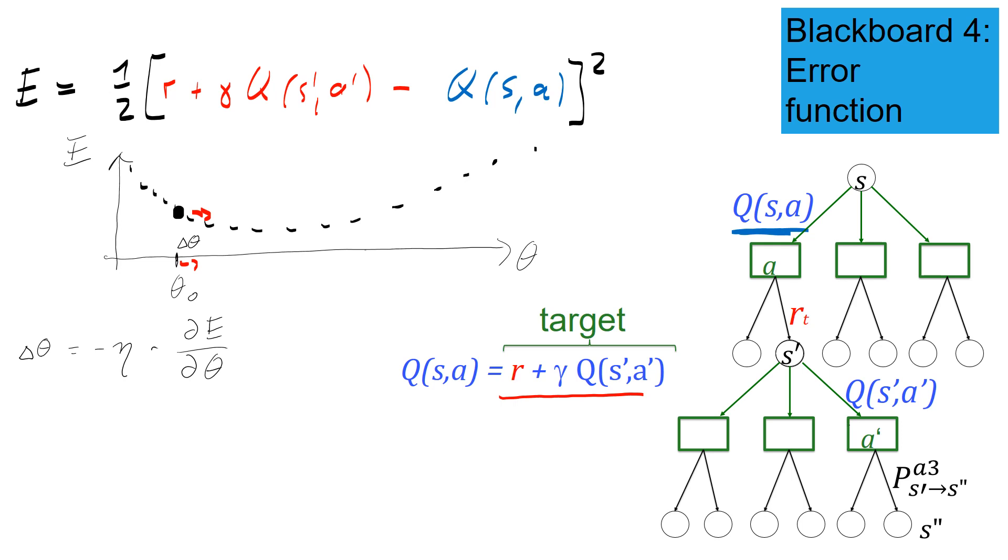Delta theta is minus eta times dE d theta. And we said we use only the dependence of theta in the Q value you want to change, not in the target part. So the theta dependence is considered to be here. So let's take the derivative. I have to use the chain rule. So I have a square, which is going to kill the one-half in front of the error function. So I have a eta, and then I have to copy whatever I have here. And then I have to take the derivative of this term here with respect to theta, which gives me a minus sign, which cancels this minus sign. So I have a plus.